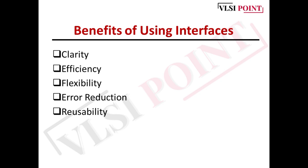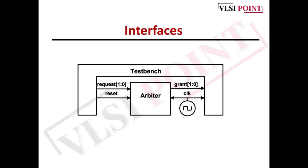In the next few sections, we will see a test bench connected to an arbiter using individual signals, and again using an interface. Here is a diagram of a top-level design including a test bench, arbiter, clock generator, and the signals that connect them. The signals are request, reset, grant, and clock. Clock is given to both the arbiter and the test bench. Consider this arbiter as the DUT — we are trying to connect this DUT with the test bench to understand how interfaces can ease your coding effort and make code more structured and organized.